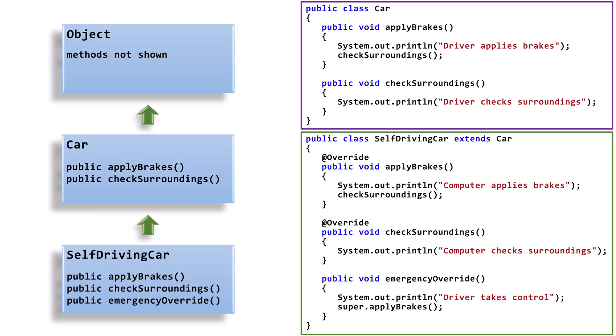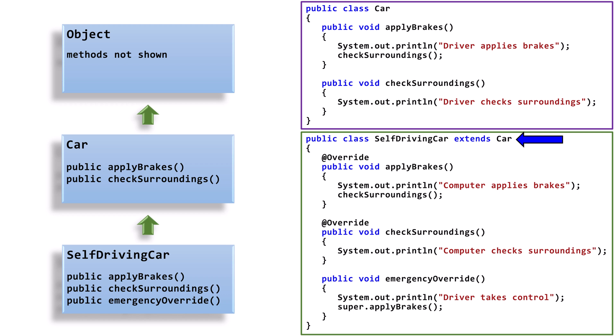We have two sample classes. The first is the Car class, where we define the method applyBrakes and the method checkSurroundings. The second class, Self-Driving Car, is a subclass of Car. Here, instead of inheriting applyBrakes from Car, we override it. And instead of inheriting checkSurroundings from Car, we override it as well. EmergencyOverride is a new method unique to Self-Driving Car.